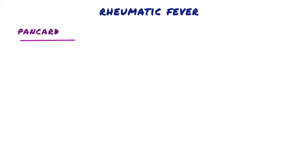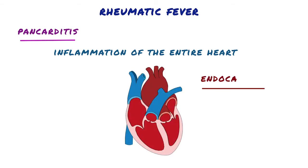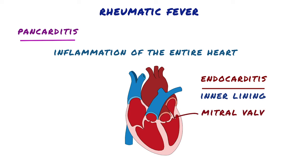Secondly, pancarditis, which means inflammation of the entire heart — the pericardium, myocardium, and endocardium. Endocarditis is inflammation of the inner lining, which includes the valves. Valvular damage is the hallmark of rheumatic carditis. The mitral valve is almost always affected, sometimes together with the aortic valve. Isolated aortic valve involvement is rare.